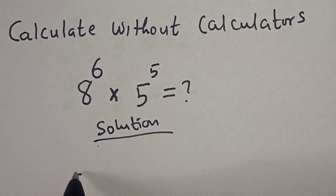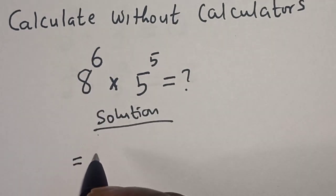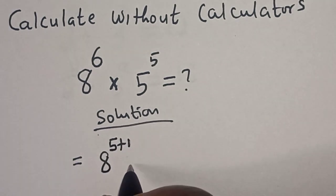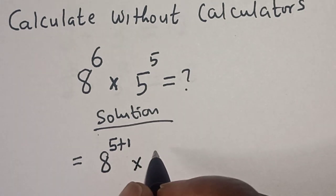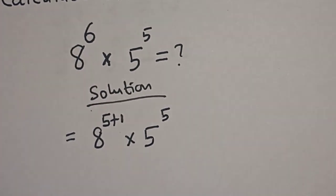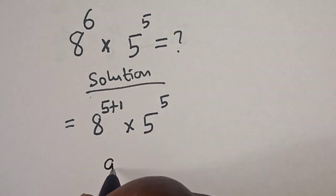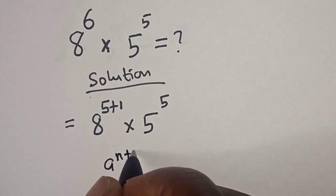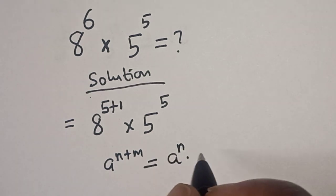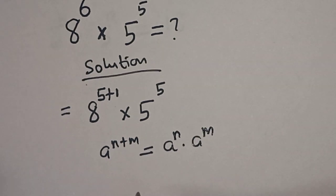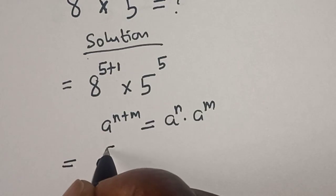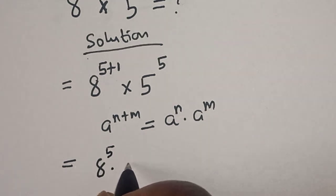We have 8 raised to power 6 multiplied by 5 raised to power 5. This is equal to 8 raised to power 6, which can be written as 8 to the power of 5 plus 1, multiplied by 5 to the power of 5. Remember this rule: if you have a raised to power n plus m, this is equal to a to the power of n multiplied by a to the power of m.